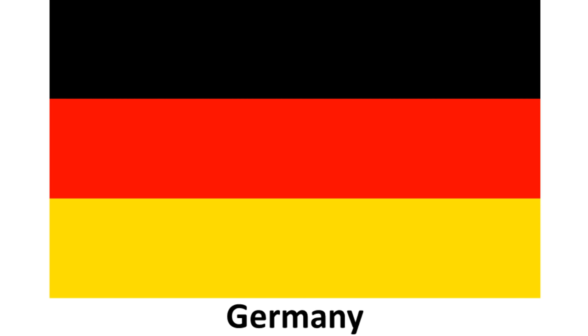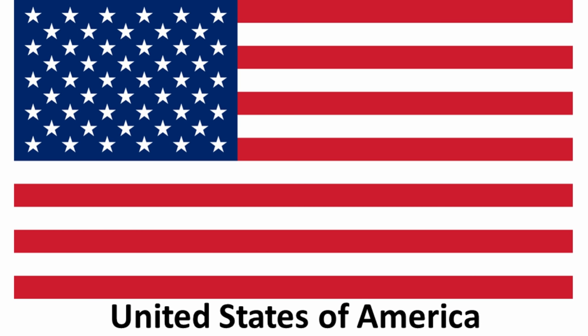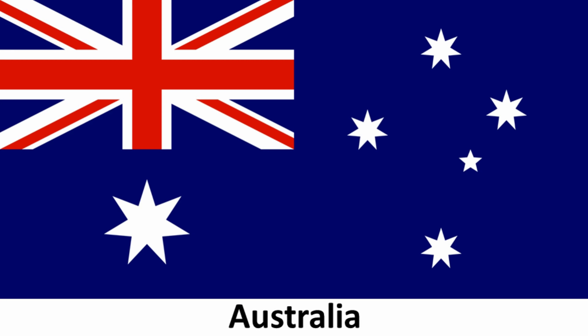The German flag has three stripes, gold and red and black. The United Kingdom's flag is the well-known Union Jack. The flag of the United States is the famous stars and stripes.